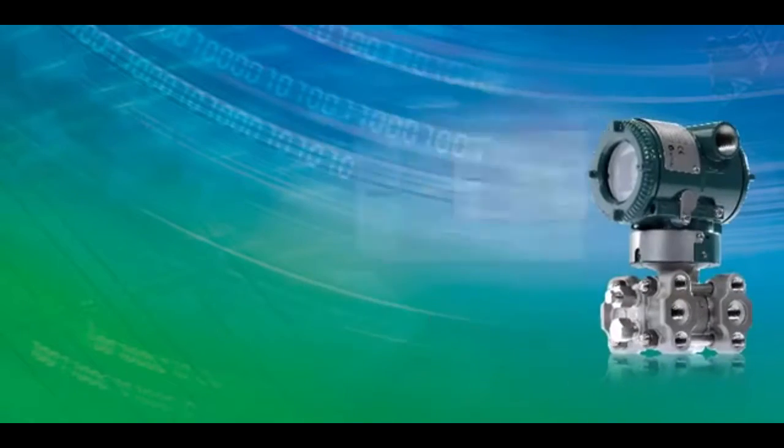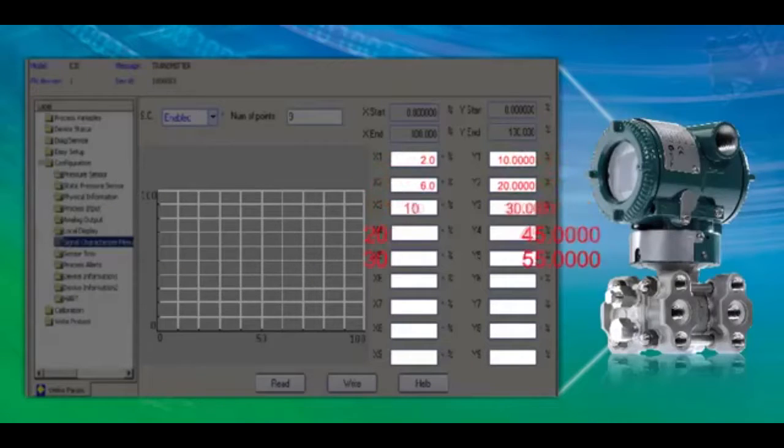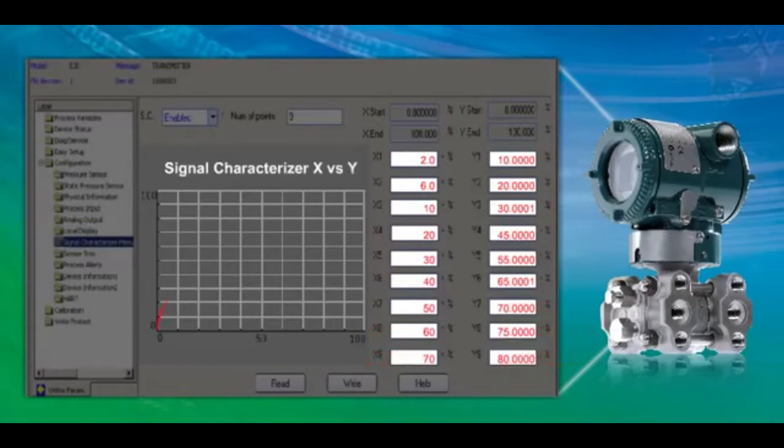A Yokogawa transmitter can be easily programmed to output and display volume of irregularly shaped tanks with its signal characterizer function.